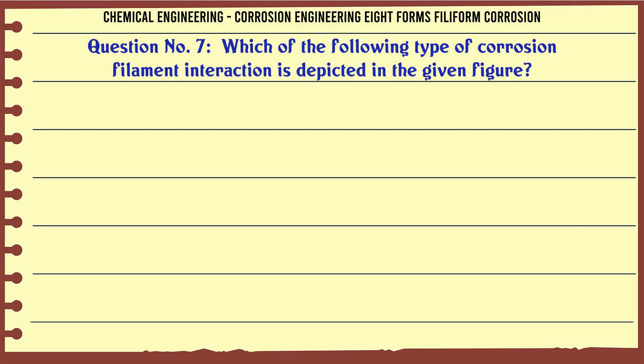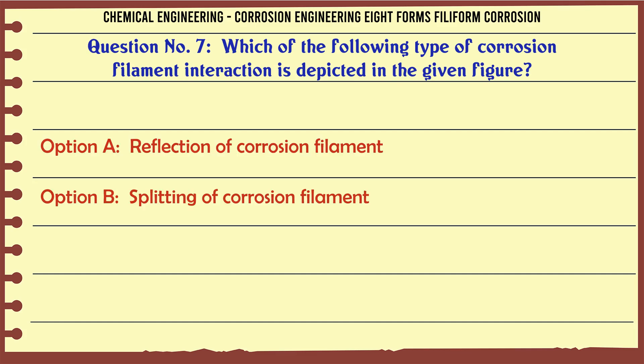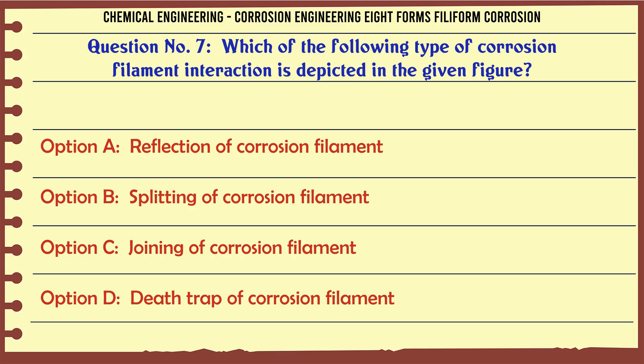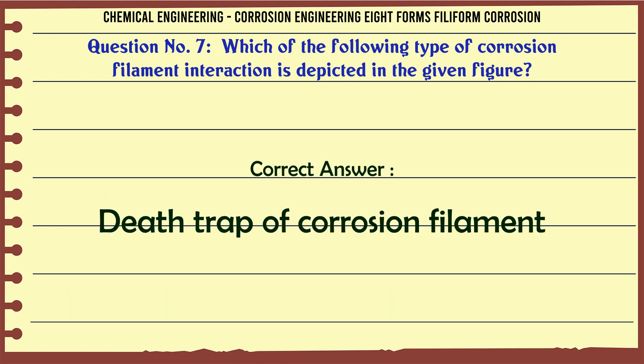Which of the following types of corrosion filament interaction is depicted in the given figure? a. Reflection of corrosion filament. b. Splitting of corrosion filament. c. Joining of corrosion filament. d. Death trap of corrosion filament. The correct answer is d: death trap of corrosion filament.